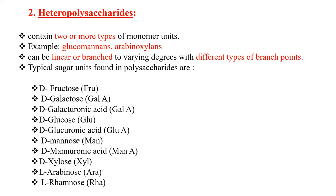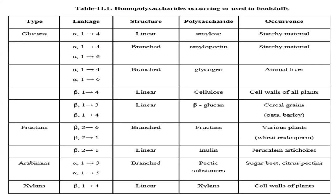Typical sugar units found in polysaccharides include D-fructose, D-galactose, D-galacturonic acid, D-glucose, D-glucuronic acid, D-mannose, D-mannuronic acid, D-xylose, L-arabinose and L-rhamnose. In the table, you can see various homopolysaccharides occurring or used in foodstuffs present in nature in abundance.